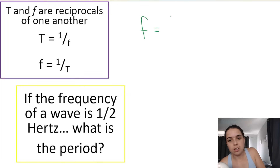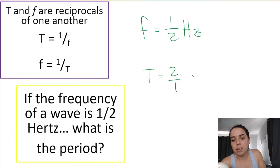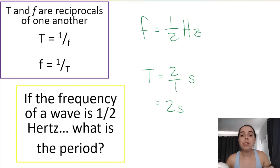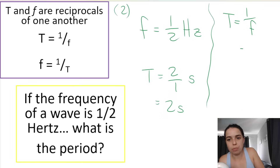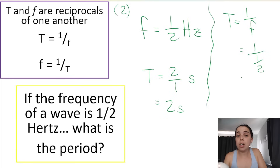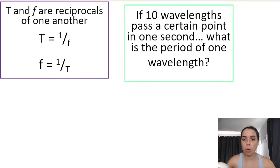If the frequency of a wave is 0.5 hertz, what is the period? Since they are reciprocals, we flip the fraction: period = 2/1 = 2 seconds. Using the formula: T = 1/f, so T = 1 ÷ 0.5. If you type that on your calculator you get two seconds. Remember your units or you do not get your mark.